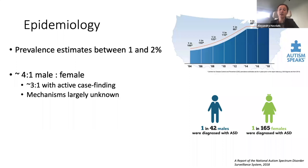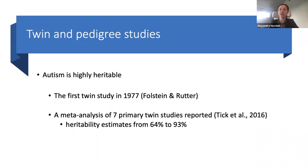The mechanisms underlying the sex difference are mostly unknown, and hypotheses include a female protective effect, prenatal steroid hormone exposure, and social factors like underdiagnosis and misdiagnosis in women.